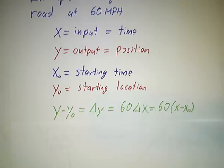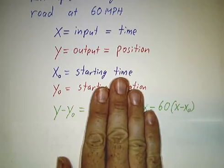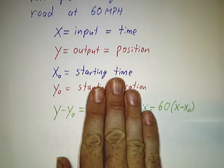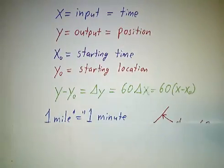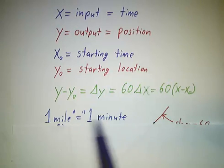So here we have our equation in point slope form. y minus y0 is 60 times x minus x0. But 60 miles an hour is also a conversion factor. It says you go 1 mile a minute.